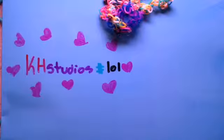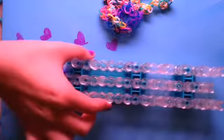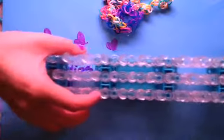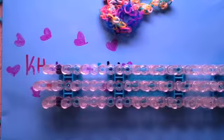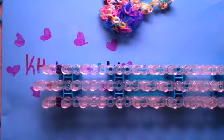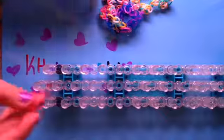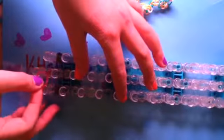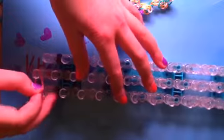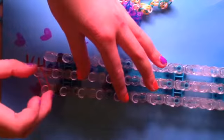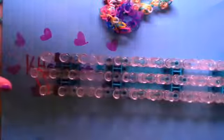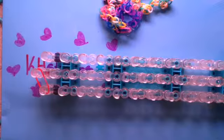First, you're going to take the loom so the arrows are facing away from you. You're going to take your first color—mine is jelly red—you're going to go from that red arrow to the right and push your band down. You can also go to the left, it really doesn't matter, but I like to go to the right.